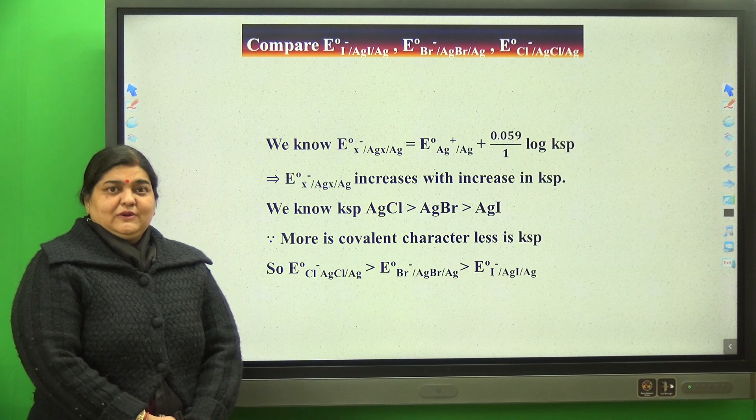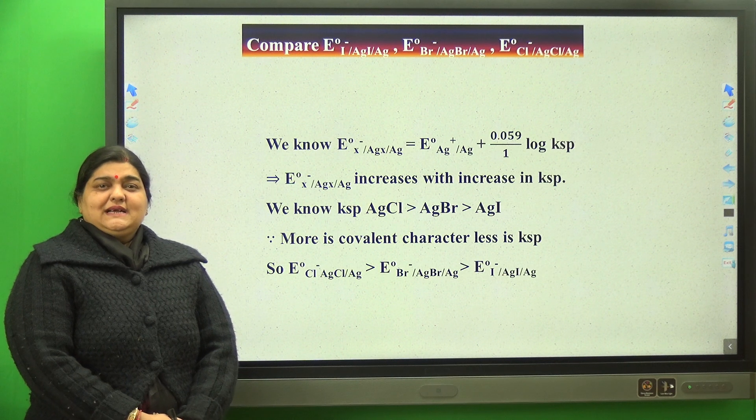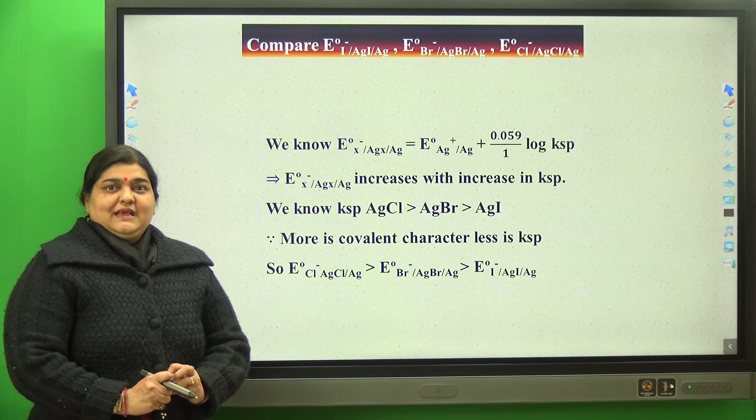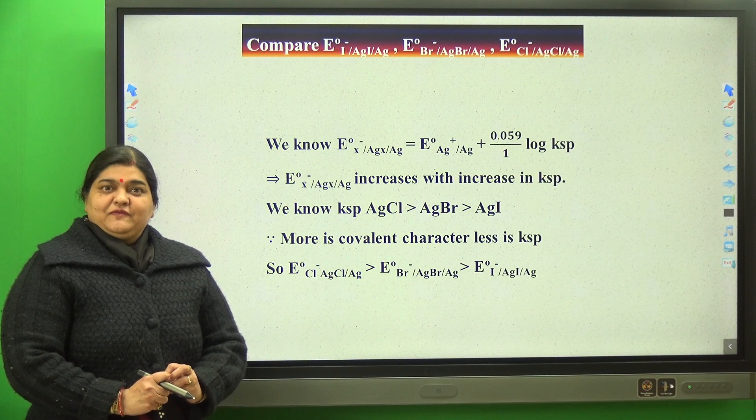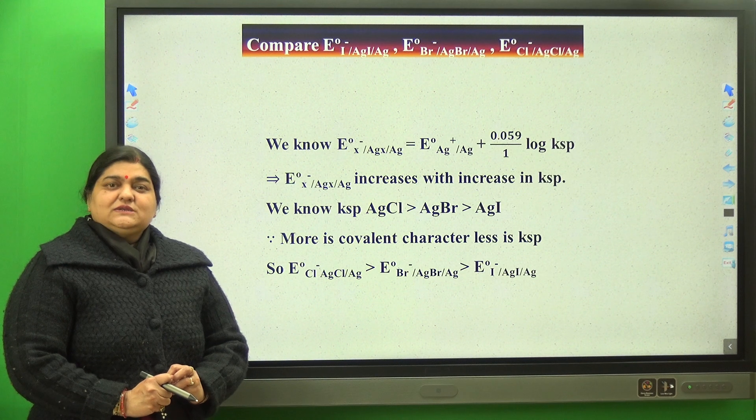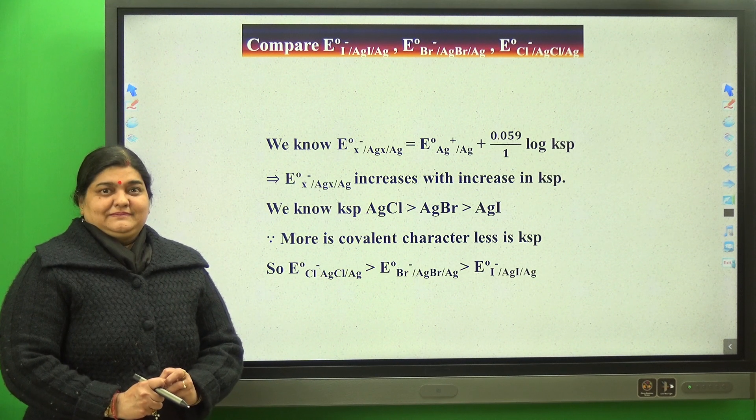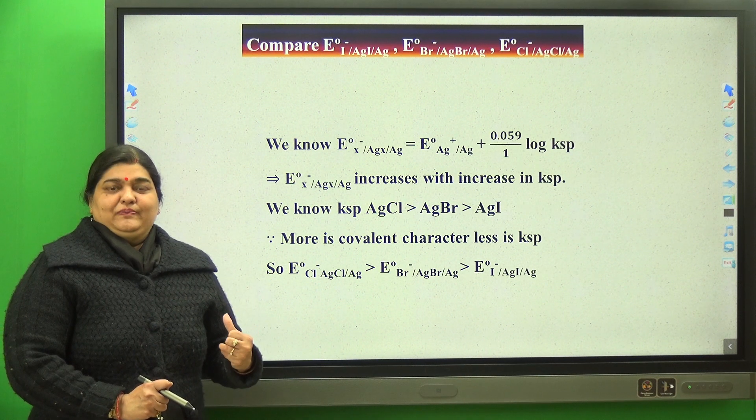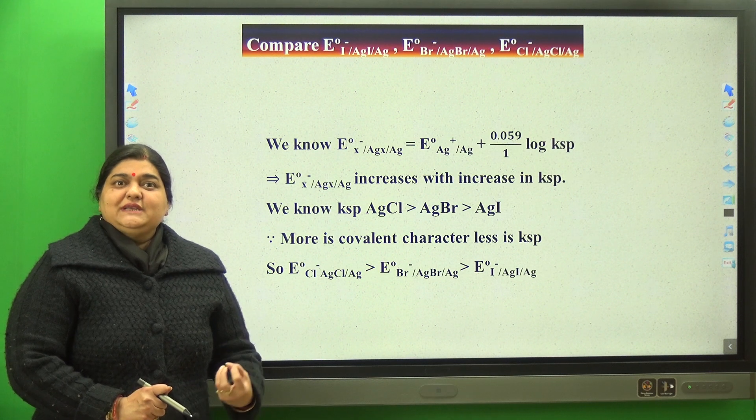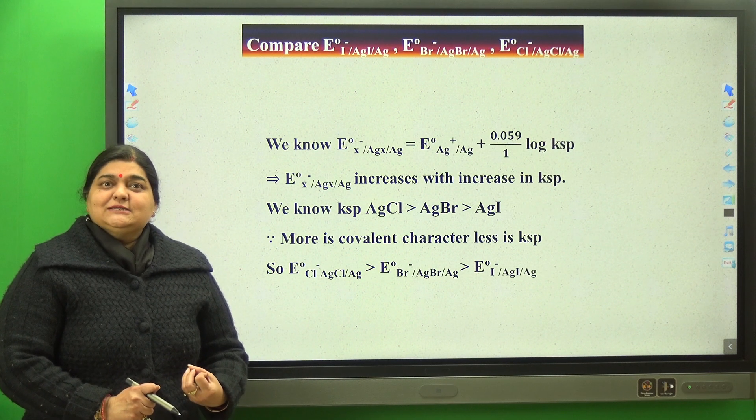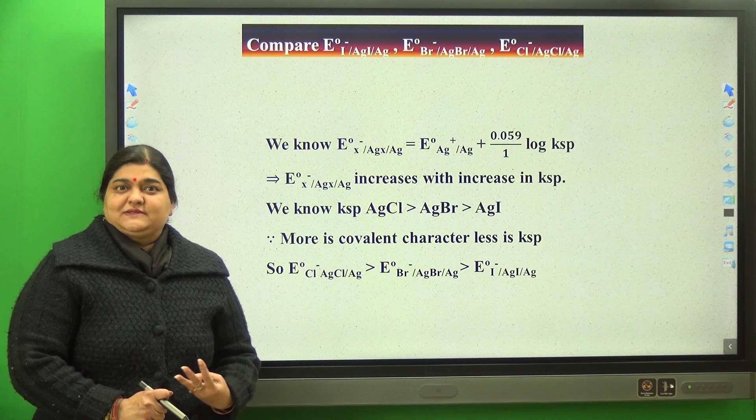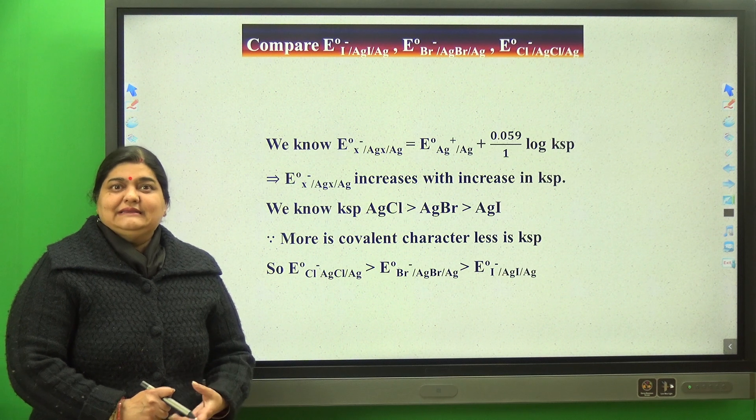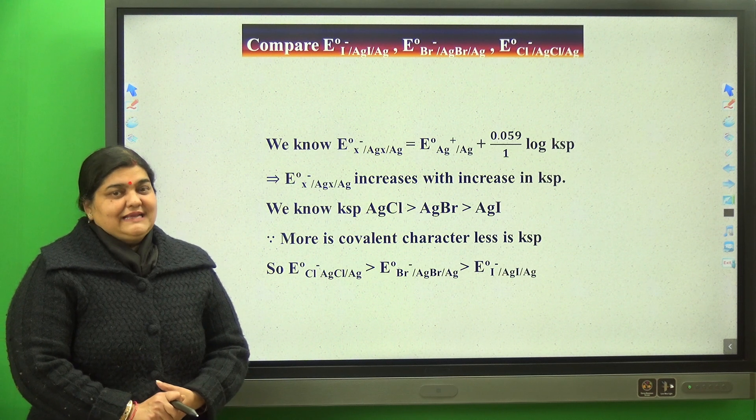In that particular expression, we basically correlate electrochemistry with ionic equilibrium. After finding the relationship, we incorporate solubility product into the expression. In this particular example, I would like to tell you how one question can be asked taking into consideration three chapters of chemistry: electrochemistry, ionic equilibrium, and chemical bonding. Let's start.